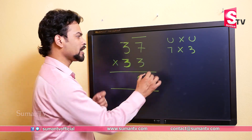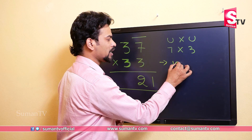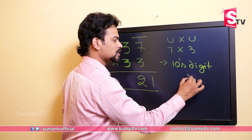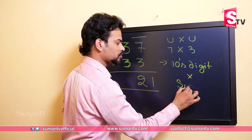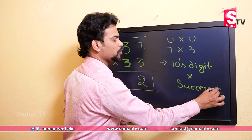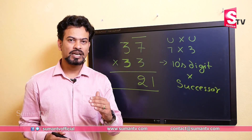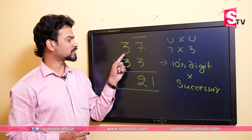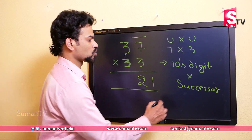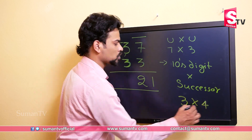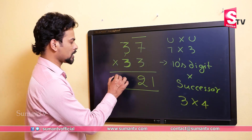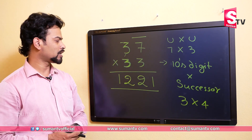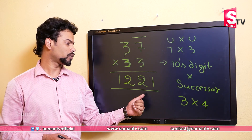In the second step, we multiply the tens digit with its successor — successor means the next digit. Here the tens digit is 3, so the next digit of 3 is 4. We multiply 3 by 4, which is 12. So the answer to 37 multiplied by 33 is 1221.